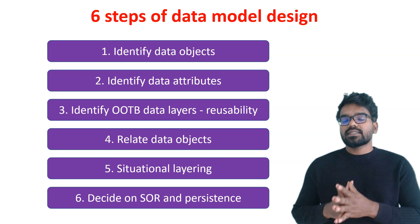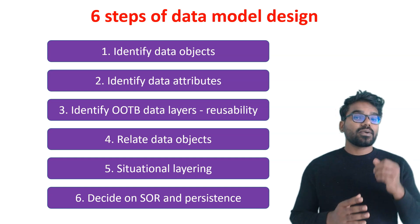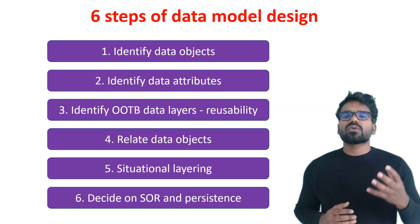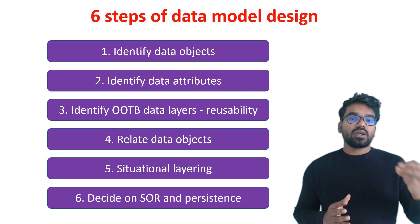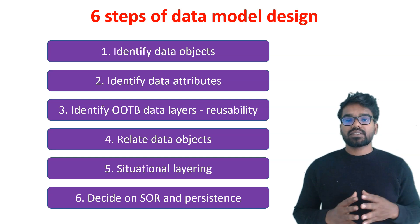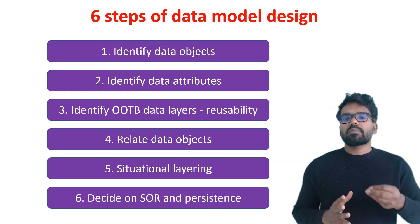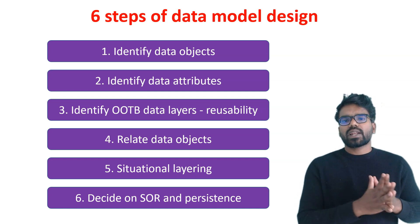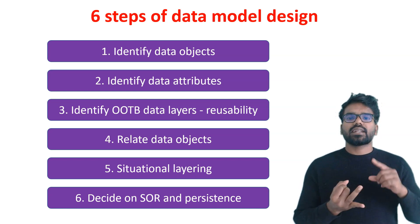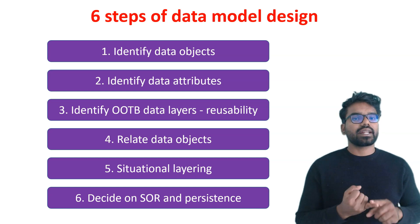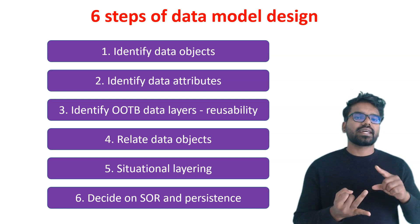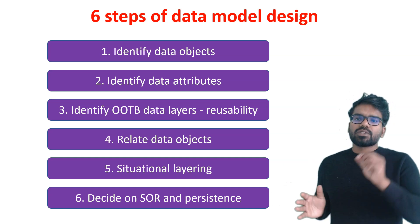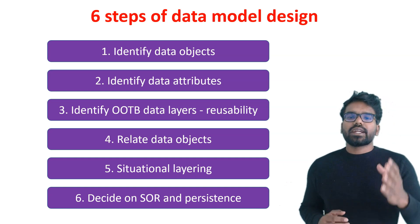Finally, as a sixth point — and this is the main point — you have to decide on the system of record or the persistence. It means who is going to be the source of the data. Customer details and policy details can be sourced from a different system, and for other data objects maybe Pega application is the system of record. This helps to decide what type of class to create — either abstract or concrete. Concrete classes can have instances, whereas abstract classes cannot. When you complete all six steps, you are ready to go for data model design.